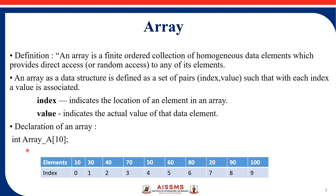Here we can see a declaration of an array: int, data type, array name A, and 10 in the square bracket — that is nothing but the size of the array A. Inside memory, A of 10 means we can store a maximum of 10 values at array A's location. The elements shown are 10, 30, 40, 17, up to 100, and the indices go from 0 to 9. Since all values are integers, this is a homogeneous data element collection.